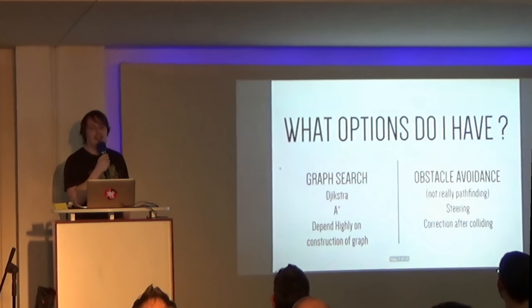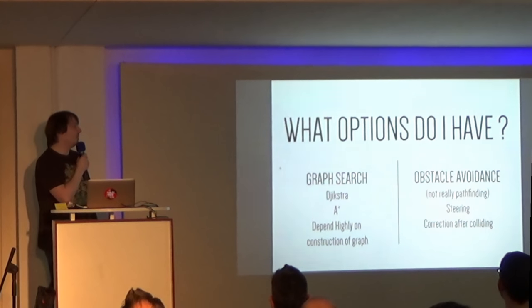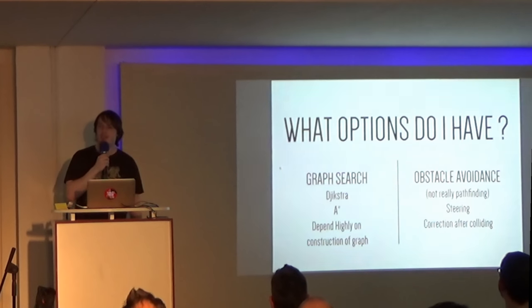And then the question is, what options do I have? Well, generally, it comes down to these two things. One is graph search, and the other is obstacle avoidance, which, granted, isn't really pathfinding, but it can fulfill some of the purposes of it.